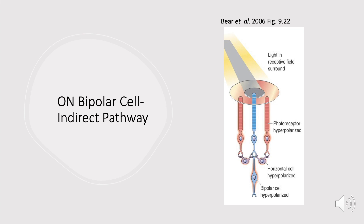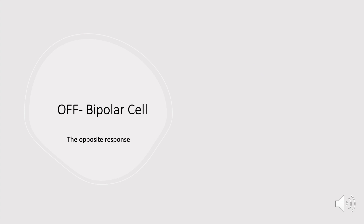The center photoreceptor is in the dark, so it's normally depolarized. Because our horizontal cell is inhibited and not releasing GABA — which is inhibitory — onto this center photoreceptor, its depolarization causes it to release glutamate. Since we're dealing with an on bipolar cell with metabotropic receptors, which are inhibited by glutamate, that cell is getting inhibited by all that glutamate release and ends up hyperpolarized, as shown at the bottom of the diagram.